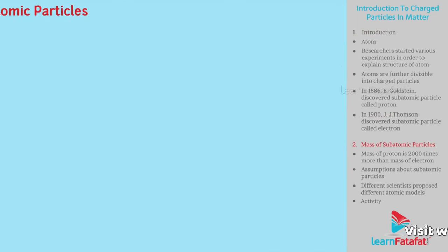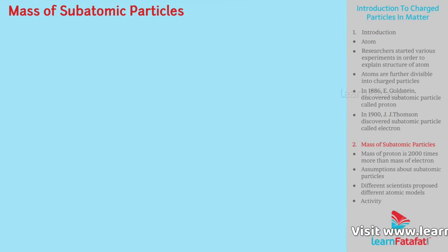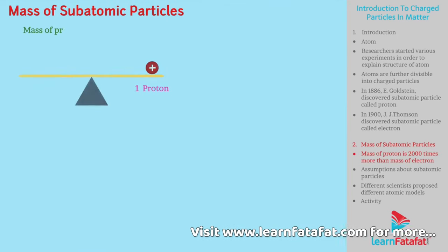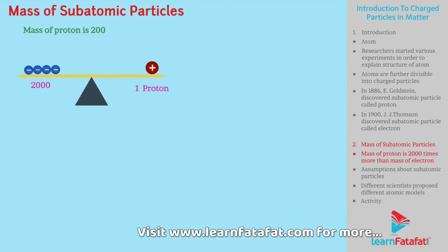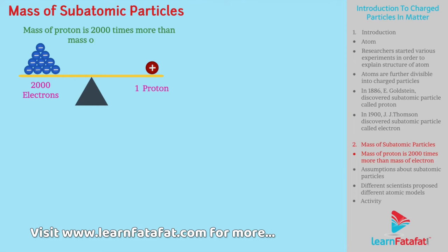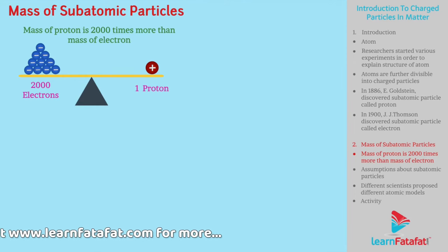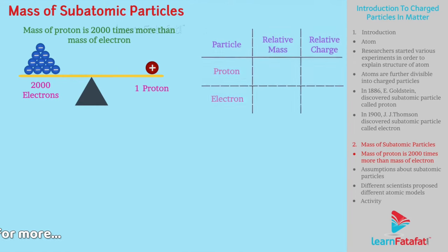Regarding the mass of subatomic particles: the mass of a proton is 2000 times more than the mass of an electron. It is taken as one unit with positive charge. The mass of an electron is considered to be negligible, with charge minus 1.